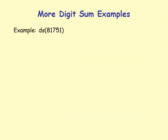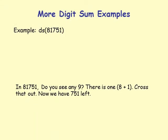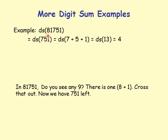More examples: digit sum of 81751. In this number 8 plus 1 equals 9, so cross that out. Remaining digits are 7, 5, 1. Digit sum of 7 plus 5 plus 1 equals digit sum of 13, which is 4.